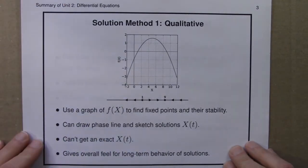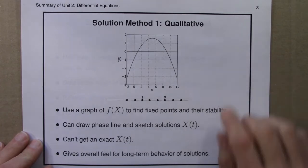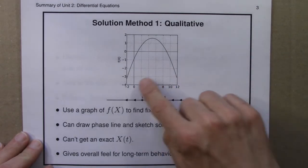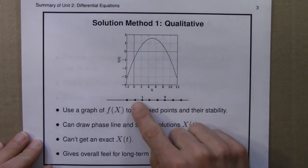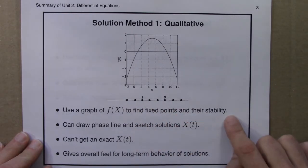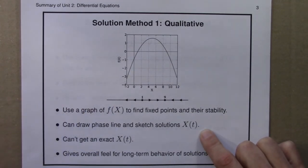There are three main classes or types of solution methods for differential equations. The first is qualitative or geometric techniques. There, we might sketch the right-hand side of the differential equation. And from that, we can figure out fixed points and their stability. We can draw a phase line, as I've done here, and we can sketch the general shape of solutions, the directions in which the solutions are going.